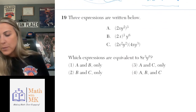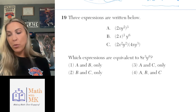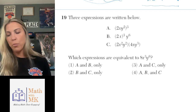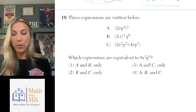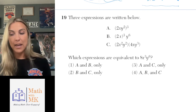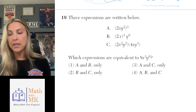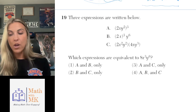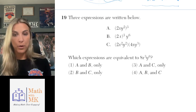Three expressions are written below. We're dealing with exponent rules and they want to know which expressions are equivalent to 8x cubed y to the sixth power. When you have an exponent outside of the parentheses, like in choices A and B, that exponent applies to everything inside. So in choice A, I'm raising 2x y squared to the third power using the power-to-power rule, which means I multiply the exponents.